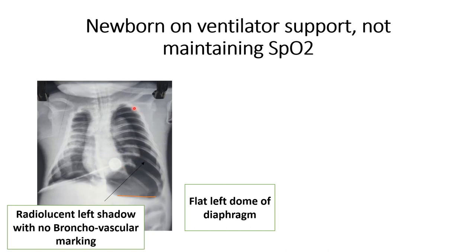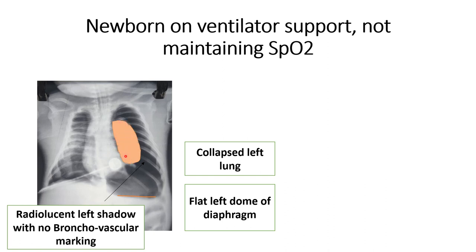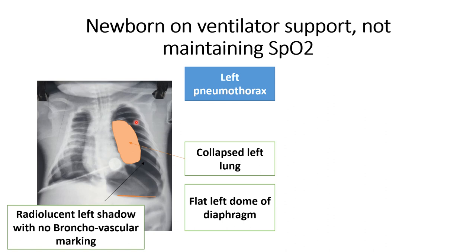Here you can see the collapsed left lung because of left-sided pneumothorax. We have to differentiate this radiolucent shadow from emphysema. Whenever a patient has emphysema, bronchovascular markings will be visible in the radiolucent shadow. Also, the curvature of the dome of the diaphragm will be maintained in emphysema, while it will be altered in pleural disease.